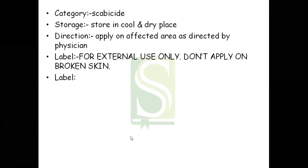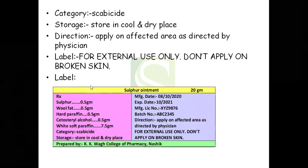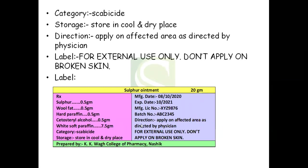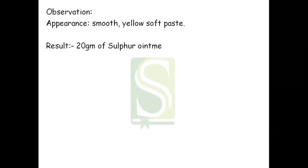The label for this formulation includes: the name — sulfur ointment — and how much was prepared; then the quantities, category, storage, manufacturing date, expiry date, license number, batch number, direction, and label. The label text should be written in bold and in colorful form — mostly red — because it has to be eye-catching. In observation we can write: the appearance of this product is smooth, it is yellow in color, and it is a very soft cream-paste. The result is: 20 grams of sulfur ointment was prepared and submitted.